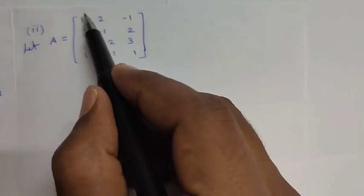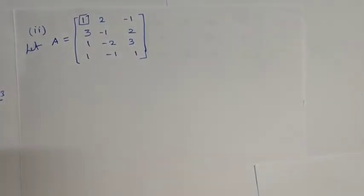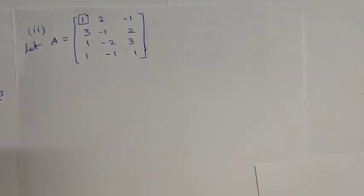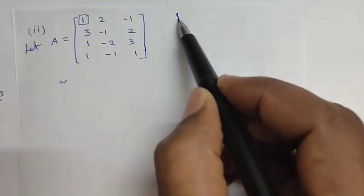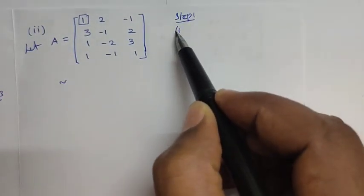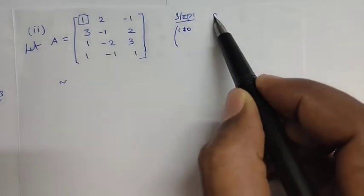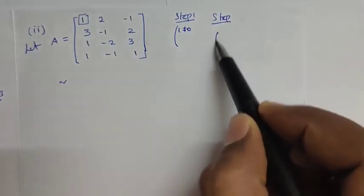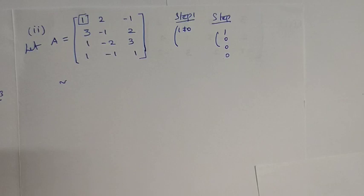If the first element is non-zero, we follow Step 1. Step 1 is okay — the first element is not equal to zero. Step 2 is here: 1, 0, 0, 0.